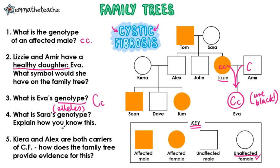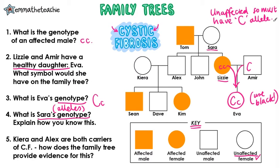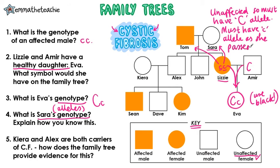What is Sarah's genotype, and explain how you know this. Let's find Sarah — here she is, and she's also an unaffected female. So because she's unaffected, she must also have a big C or dominant allele. But how do we know what the other allele is? We need to look at her children to see what she and Tom have passed on. One of her children has cystic fibrosis — one allele came from Tom, but the other must have come from Sarah. This means that Sarah must have a recessive allele herself, as she passed it on to Lizzie.